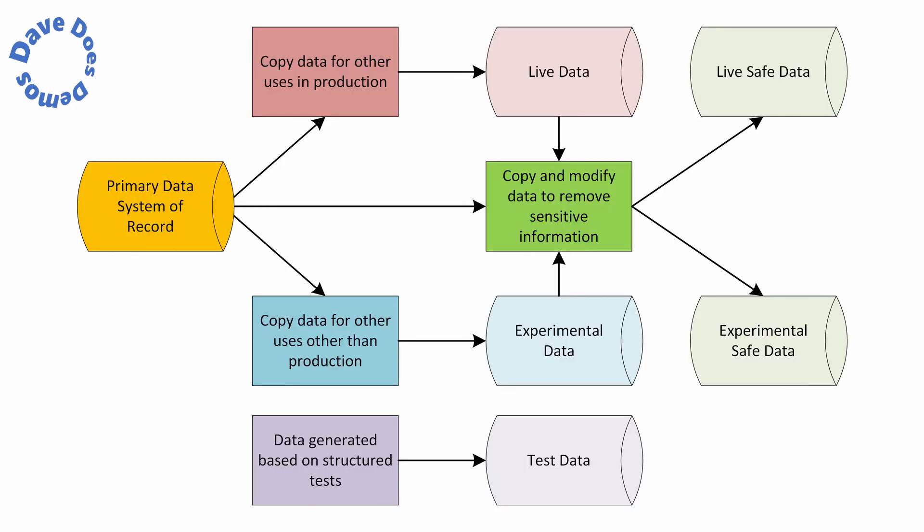I've put together a flowchart here to show you how the data gets from one place to another. At the bottom you'll see 'data generated based on structured tests' — here you're working backwards from your test to a data set. All other data flows from the actual system of record. We might take data from a CRM system and copy it for other uses in production, in which case it remains as live data. We might copy it for uses other than production systems — things that are not customer-facing or internal systems of record — in which case it becomes experimental data, but it is still primary data because it is the same actual data values and schema.